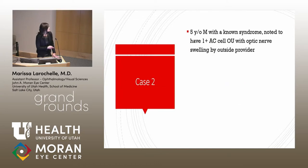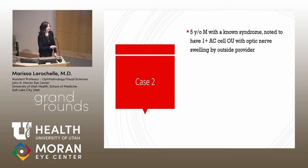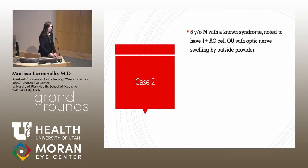Moving to some questions: does TINU tend to recur? Usually when you get an episode suppressed, what are the odds it will flare up — for both the uveitis and the nephritis? The patients we've treated here have done well on systemic therapy without recurrence, and then withdrawn after two to three years without recurrence.